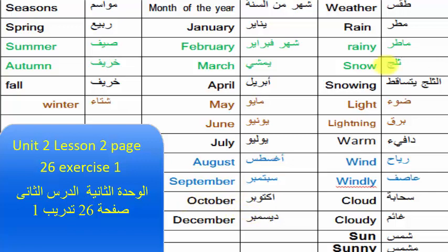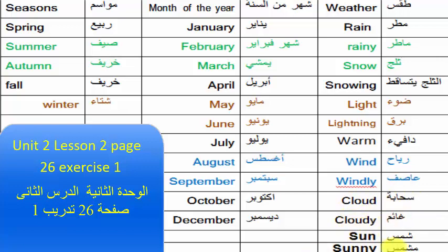Weather vocabulary: Rain. Rainy. Snow. Snowing. Light. Lightning. Warm. Wind. Windly. Cloud. Cloudy. Sun. Sunny.